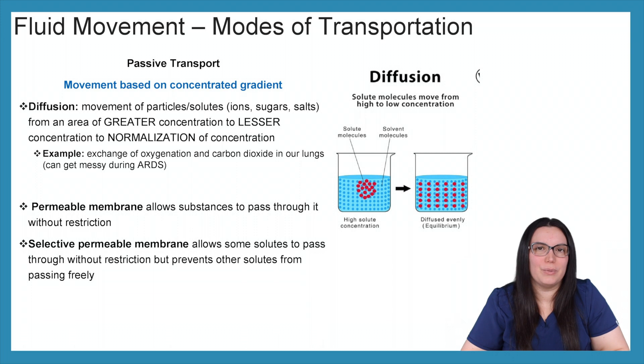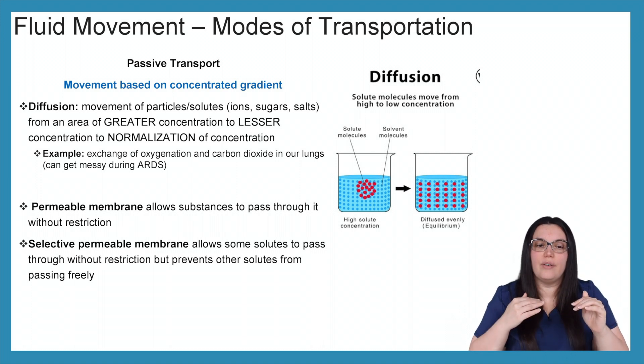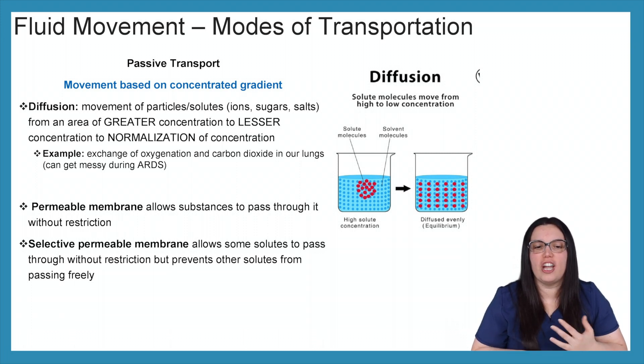Let's look at modes of transportation. We have two main modes: passive transport and active transport. When it comes to passive transport, that is the movement based on a concentration gradient. We look at diffusion. That is the movement of particle solutes either through ions, sugars, and salts from an area of greater concentration to an area of lesser concentration in order to normalize that concentration. An example of this is the exchange of oxygenation and carbon dioxide in our lungs.